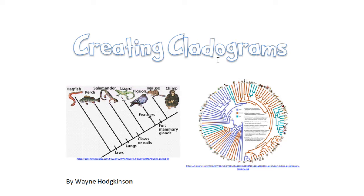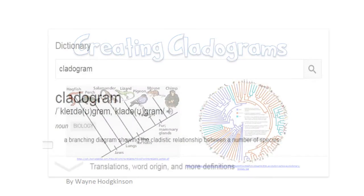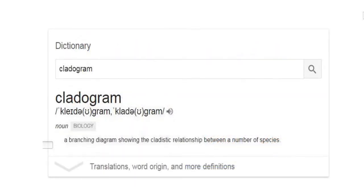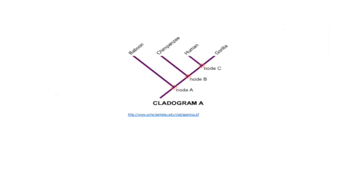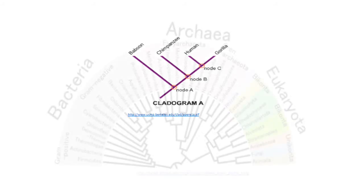In this video we're going to look at how to create cladograms. A cladogram is a branching diagram showing the cladistic relationship between a number of species. For example, here is a very simple cladogram showing the relationship between these four species.